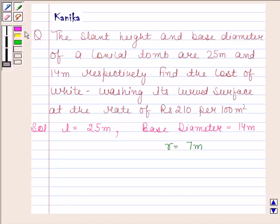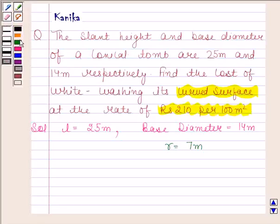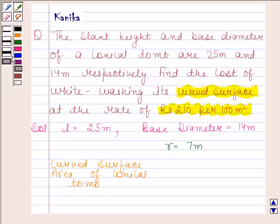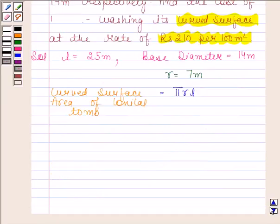In this question we have to find the cost of whitewashing its curved surface at the rate of Rs. 210 per 100 square meters. So now we have to find curved surface area of the conical tube.